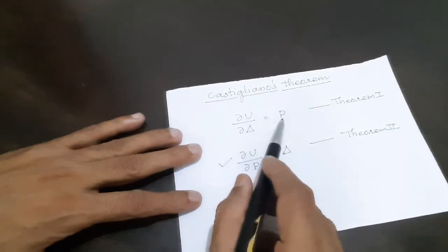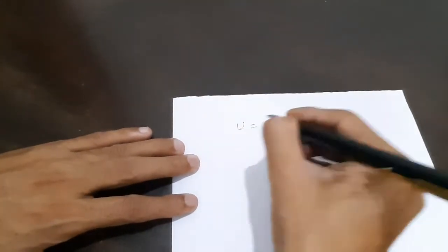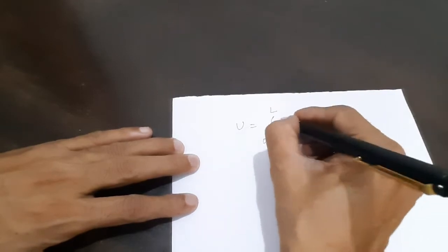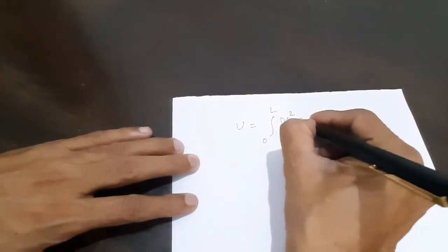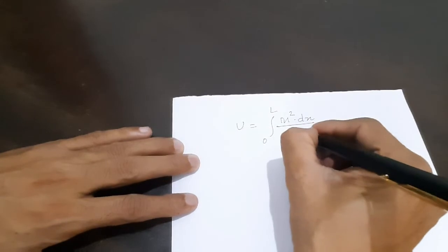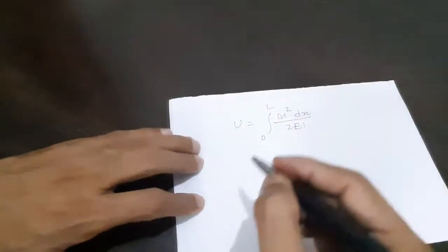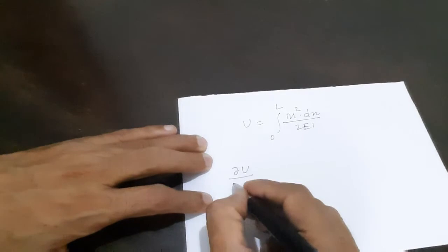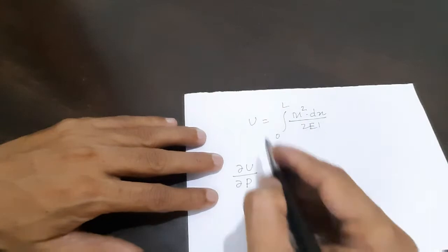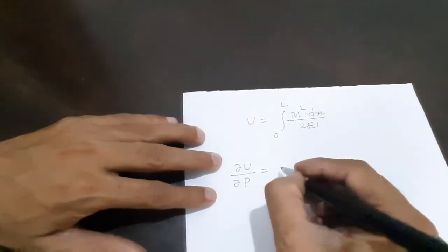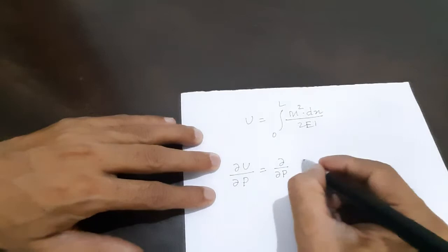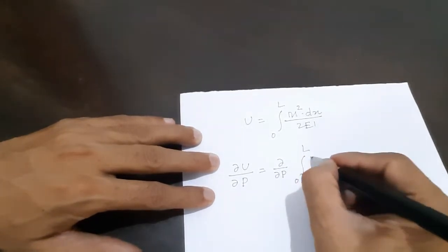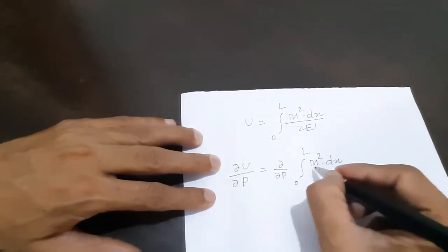Partial derivative of strain energy with respect to deflection is force — that is Theorem 1. Now, as far as rigid jointed structures are concerned, U, we know, is equal to integral from 0 to L of M squared dx divided by 2EI. Now, if I take del U by del P, that is the partial derivative of strain energy with respect to force, I need to differentiate del/del P of this integral from 0 to L of M squared dx divided by 2EI.